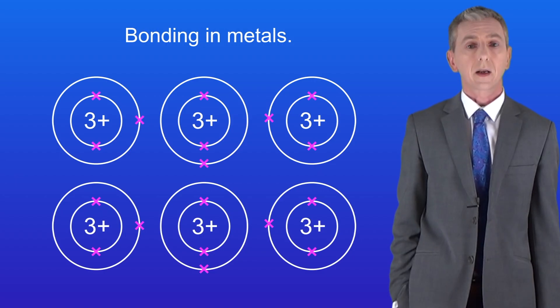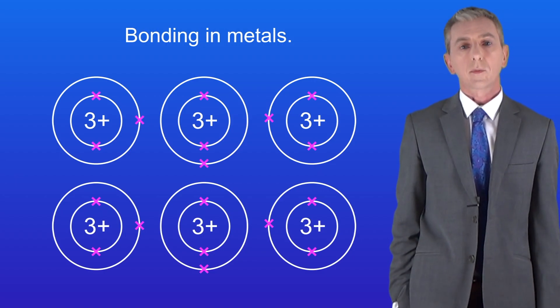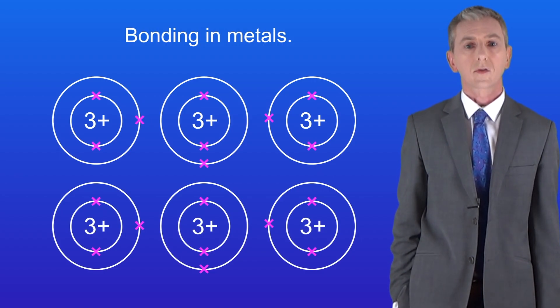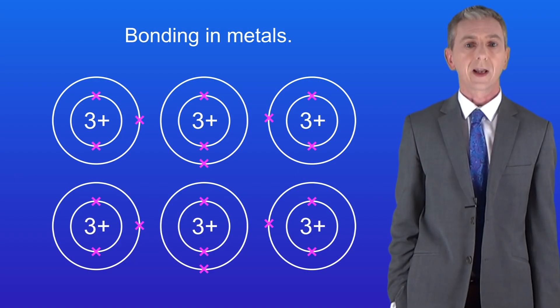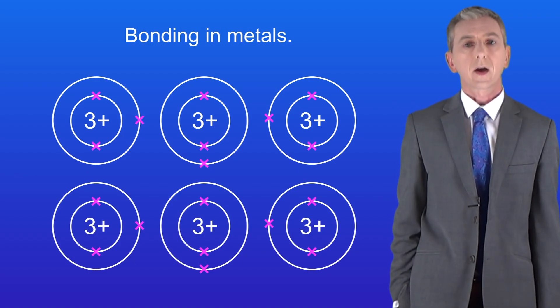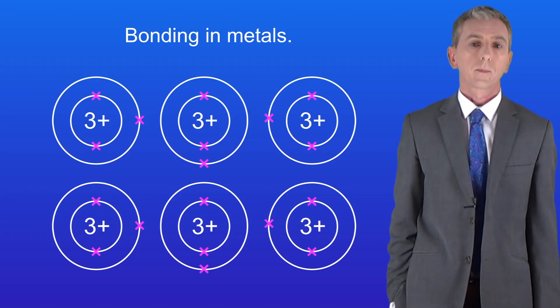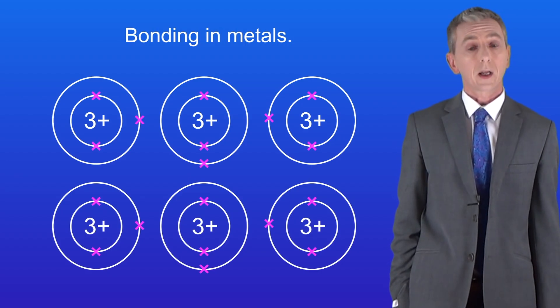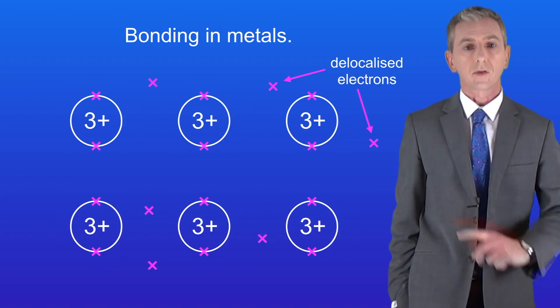Here I'm showing you atoms of the metal lithium. Lithium atoms have got three protons in their nucleus and three electrons in their energy levels. Now the key fact is that in metals the outer electrons are not attached to any individual atom, so they're free to move. Scientists call these delocalized electrons, and I'm showing you these here.